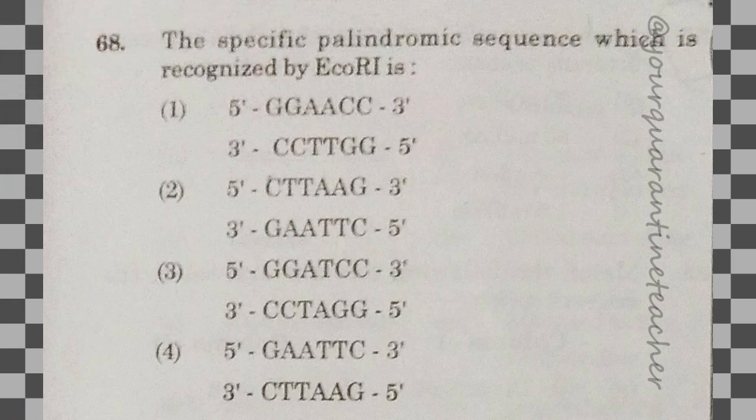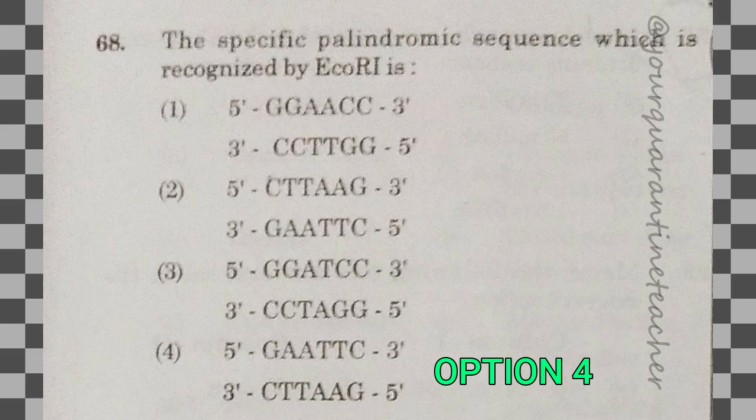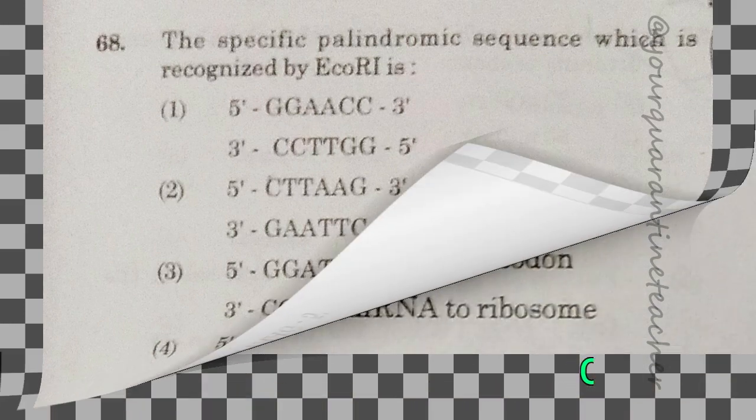68th question: the specific palindromic sequence which is recognized by EcoRI is — option 4. That is the correct option.